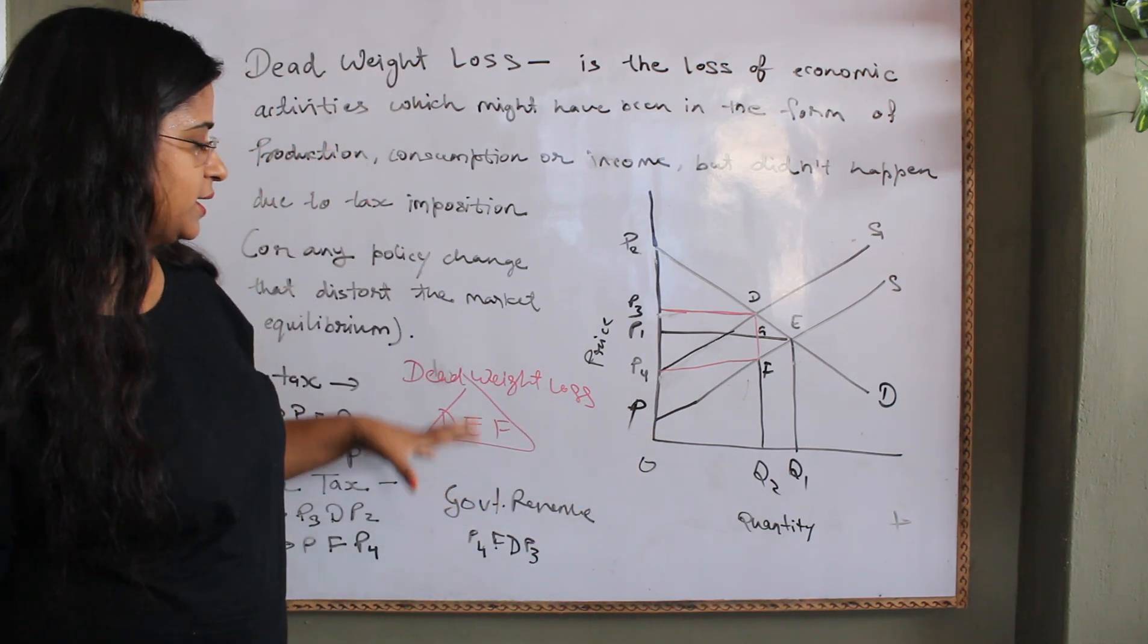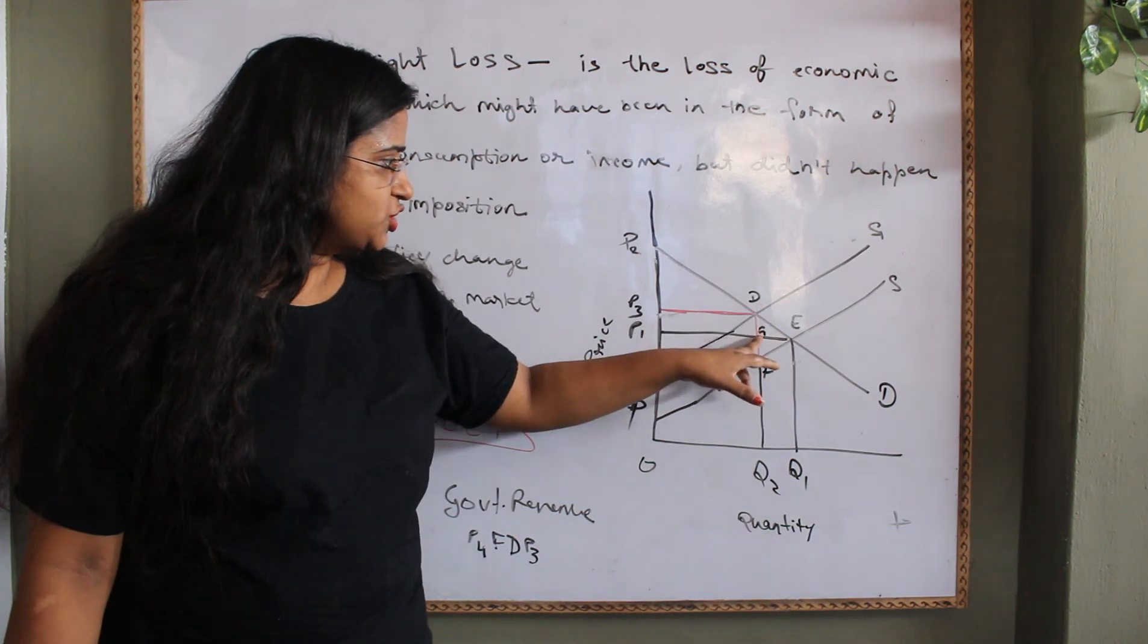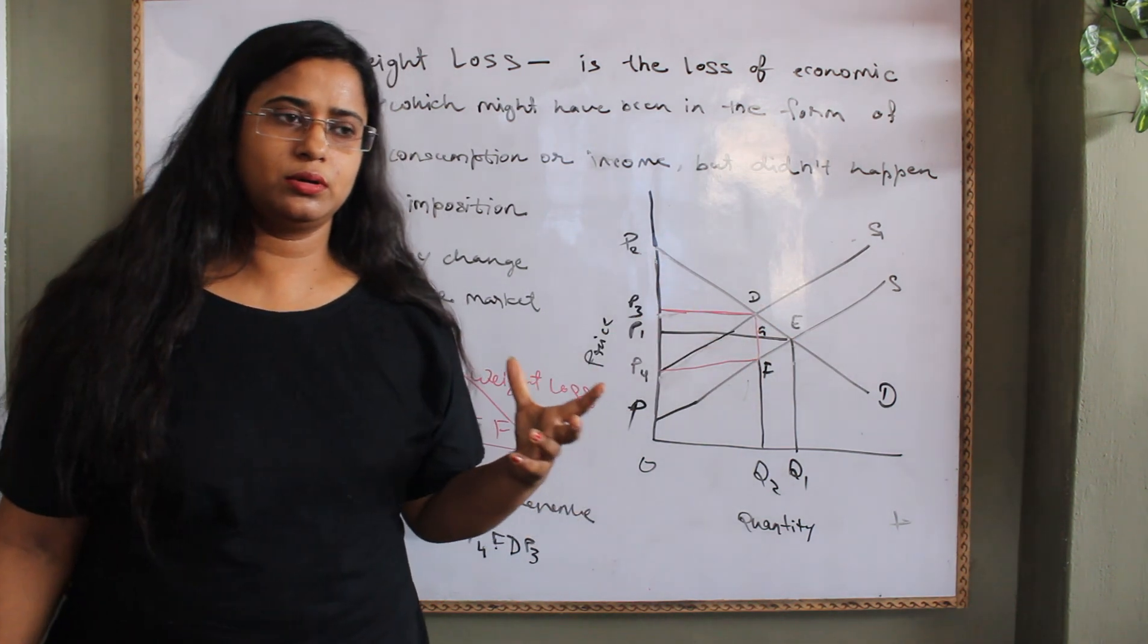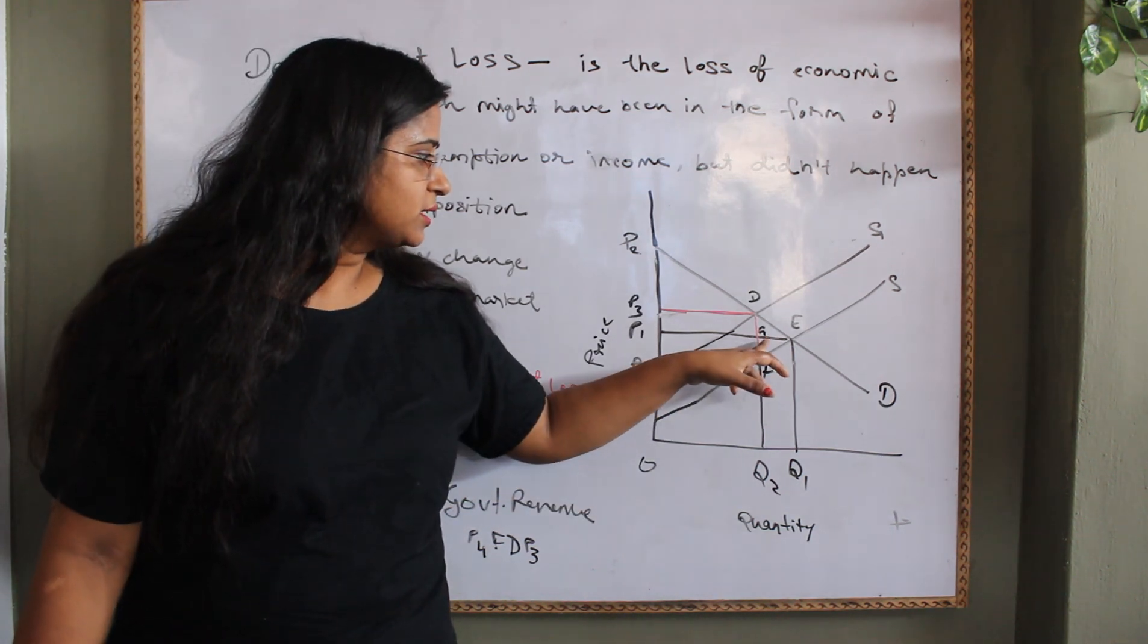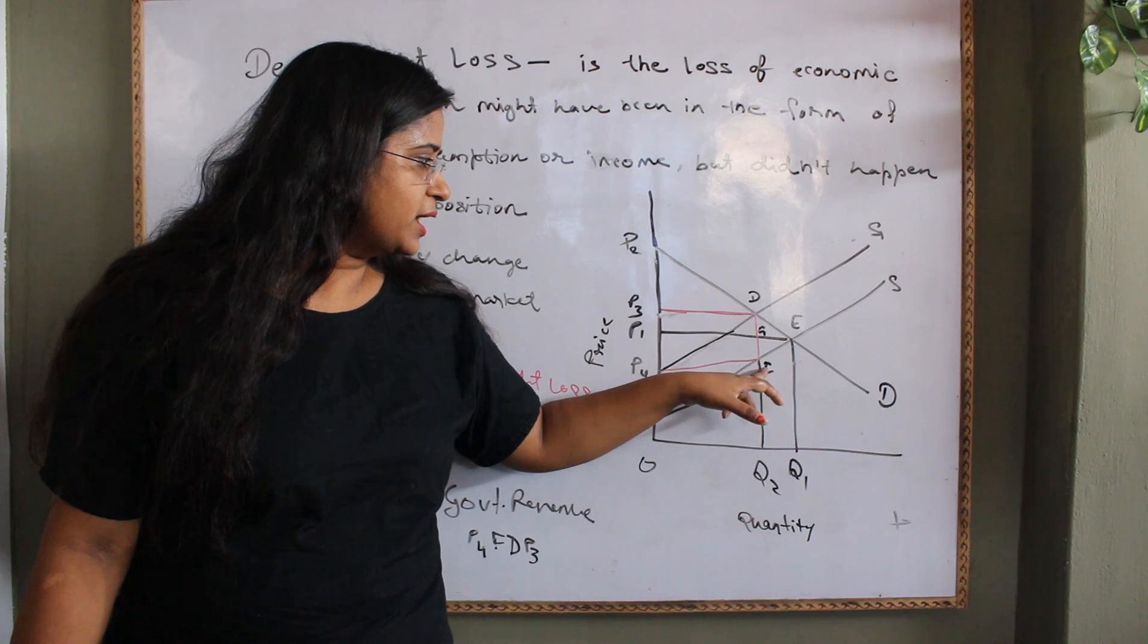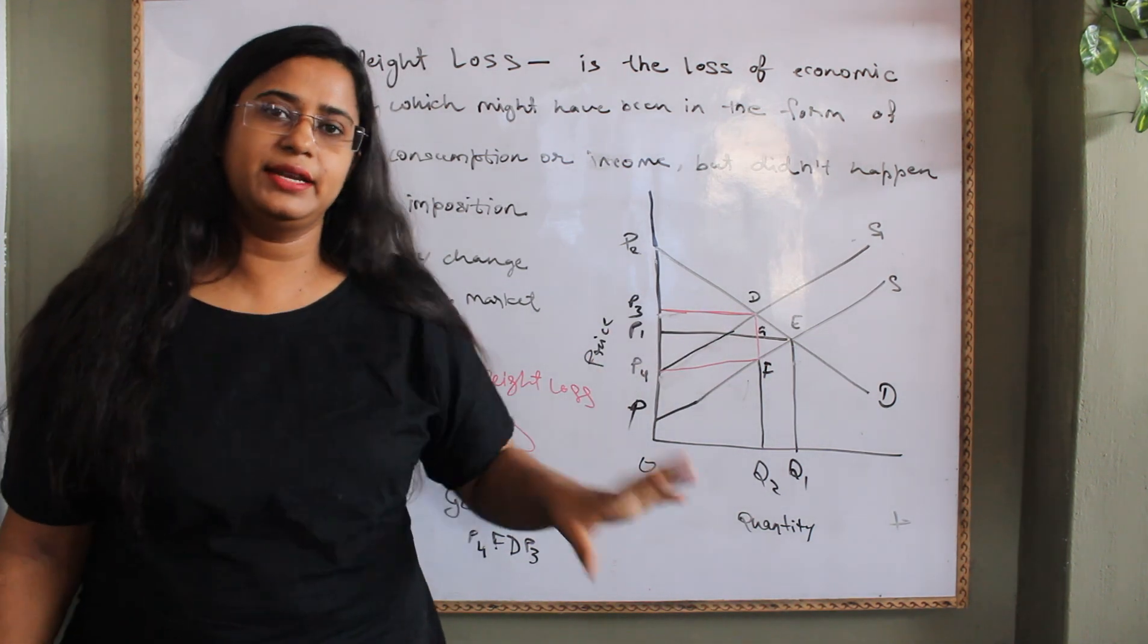This triangle is the deadweight loss. This area DGE is the loss of consumer surplus. And this GEF triangle is the loss of producer surplus which is not going anywhere.